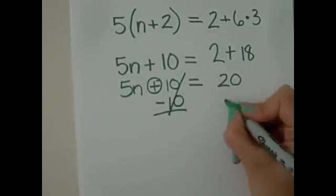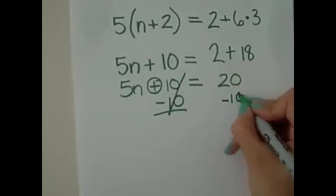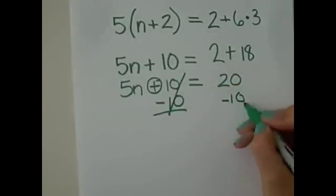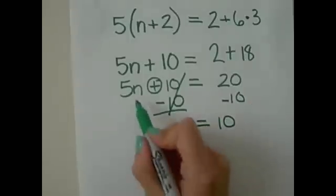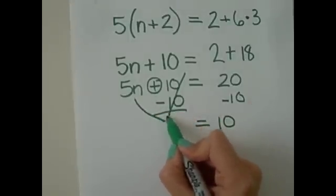And that cancels out. And we're also going to do it to this side, too. So, 20 minus 10 equals 10. And then, we're going to bring this all the way down here. We have 5n equals 10.